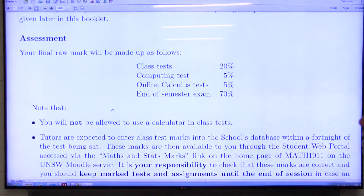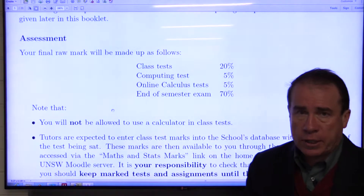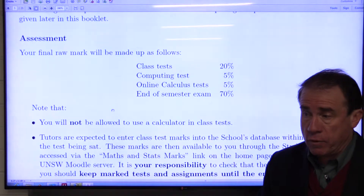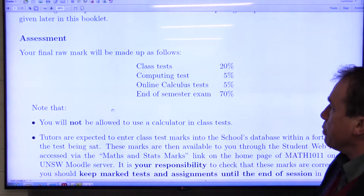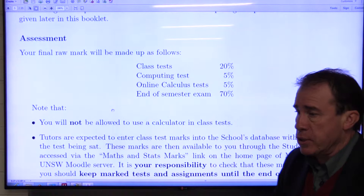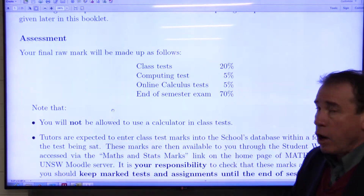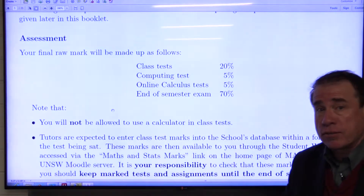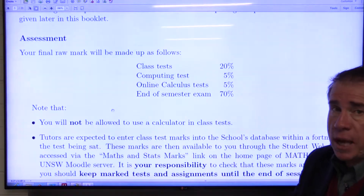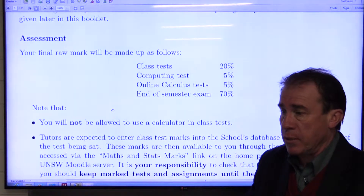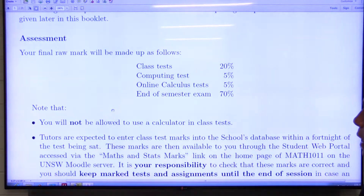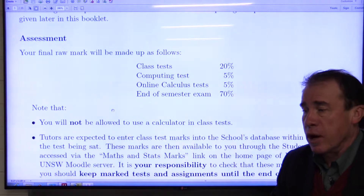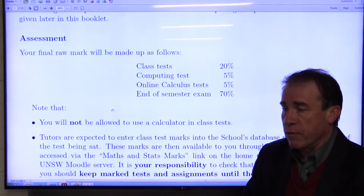The assessment will be made up of class tests. There will be four class tests — two algebra, two calculus — each marked out of ten. We take the best three of those four tests and turn that mark into a mark out of twenty percent. There will be a computing test later in the semester worth five percent. There will also be a number of online class tests counting five percent towards the total. The end of semester exam counts seventy percent and is a multiple choice exam taken during the examination period. Please note: we do not allow calculators in the class tests, though you are allowed to use them in the final exam.